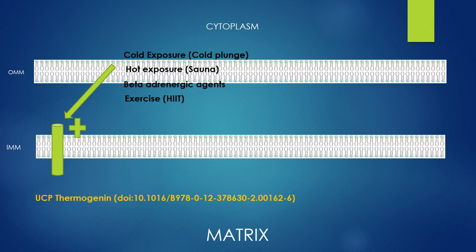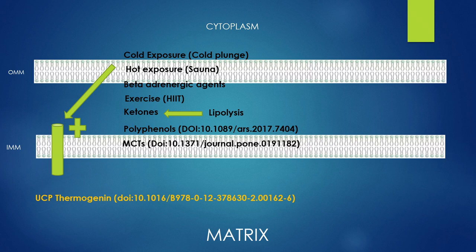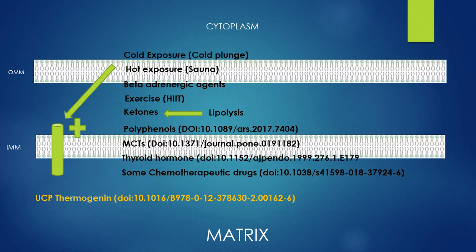Exercise — especially high-intensity interval training — stimulates uncoupling. Ketones produced from lipolysis also uncouple. Polyphenols found in green and colorful vegetables promote uncoupling. Medium chain triglycerides are easily metabolized and burned up, and they easily form uncoupling proteins. Thyroid hormone causes that — that's why if you're hyperthyroid or overdose on thyroid hormone, you lose weight. Some chemotherapeutic drugs use this mechanism to fight cancer by producing more mitochondria. Believe it or not, vinegar does this too — it's the shortest chain fatty acid with two carbons. It goes so fast into the mitochondria that it creates UCP formation and a proton leak.